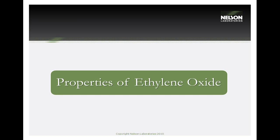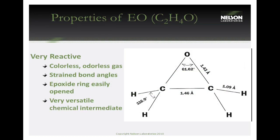Ethylene oxide is a colorless, effectively odorless gas — it does have a slight ether-like odor at toxic concentrations of 500 to 700 milligrams per liter, so if you can smell it you're already at very high exposure levels. It is very reactive, always trying to open up and react with other things, including an organism's DNA and cellular components, which disrupts them and causes their death. It is used primarily as a versatile chemical intermediate to make many other industrial chemicals.